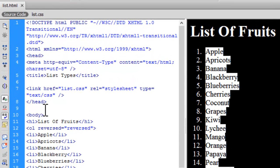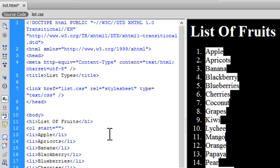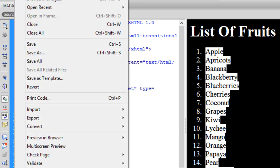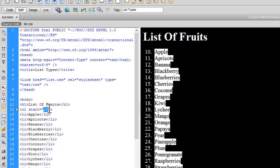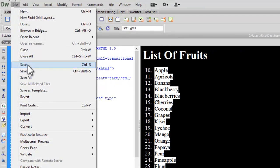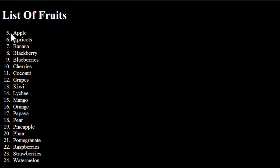Now let's use the `start` attribute. Let's say we set `start` to 10. Let's reload — see, the list now starts from 10. We can use this when we have a few list items, then some paragraphs or images, and want to continue the list from where we stopped. We can set it to any number, say 5. Let's save and reload — see, the list now starts from 5.